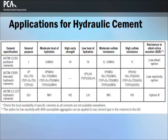In summary, Portland cements are covered by ASTM C-150, blended hydraulic cements covered by ASTM C-595, and performance based hydraulic cements covered by ASTM C-1157. This table shows a matrix of these cements and their typical applications in concrete construction.